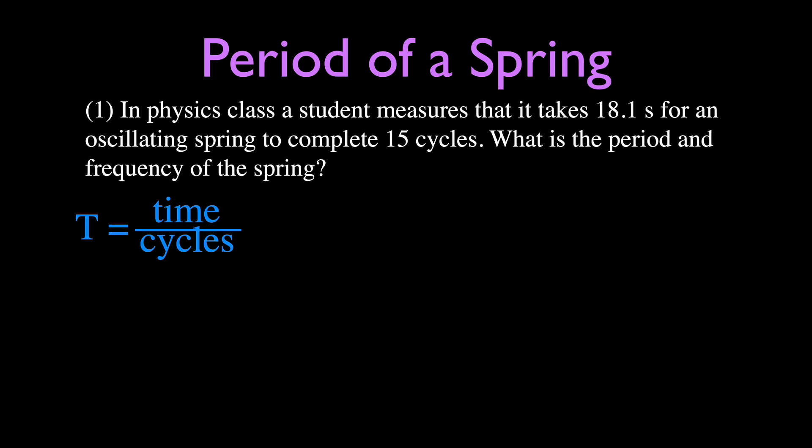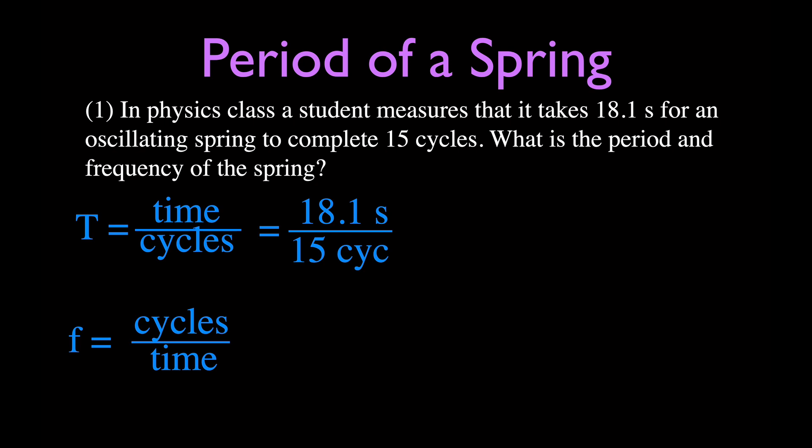The period, T, is the time for one cycle. The frequency, F, is the number of cycles per unit of time, which is generally one second — the base unit for time in the metric system. We can just plug our values in for those two equations. The time is 18.1 seconds, the number of cycles is 15, and the period is 1.21 seconds for each cycle.